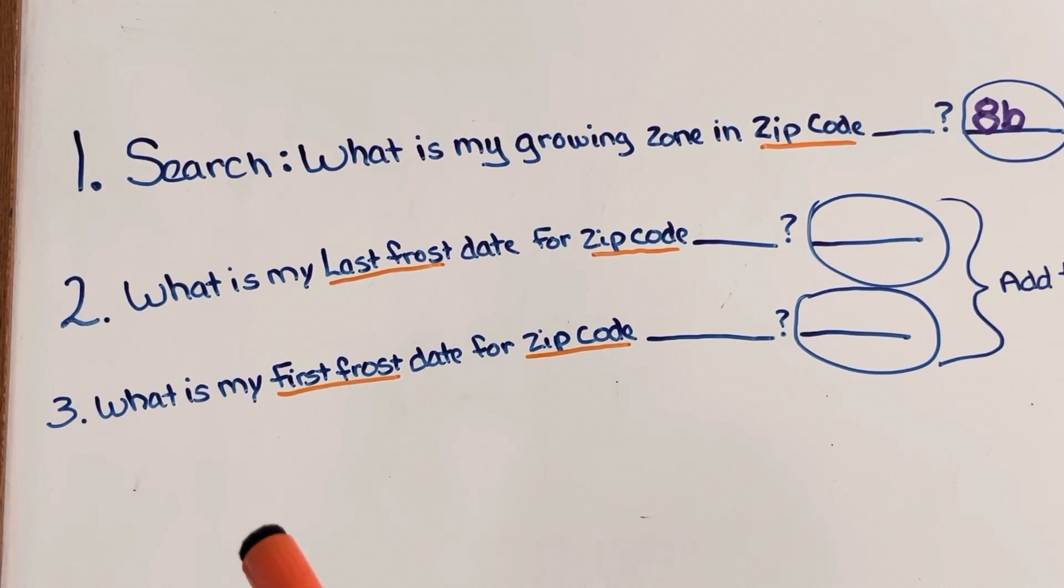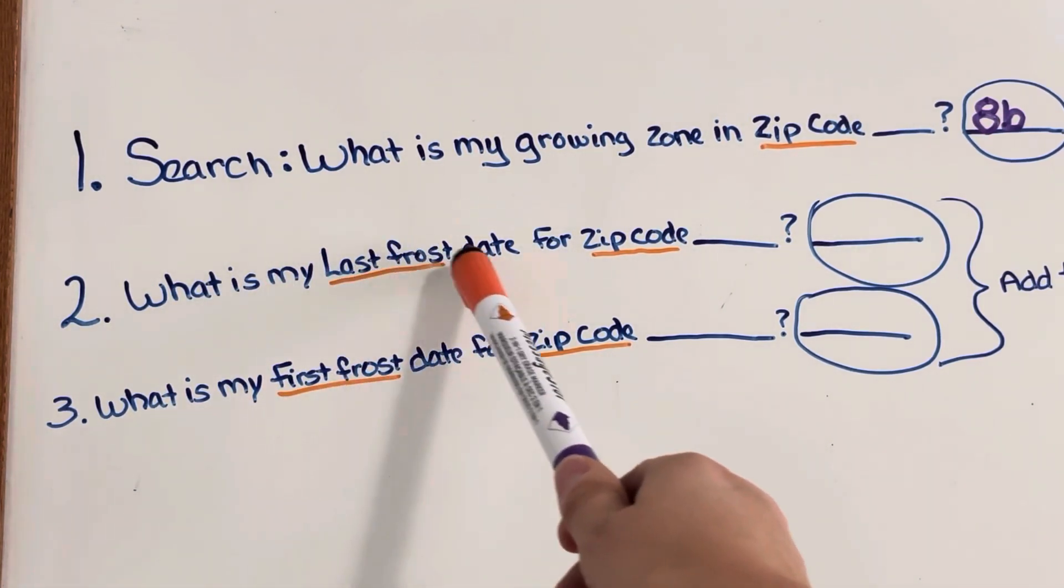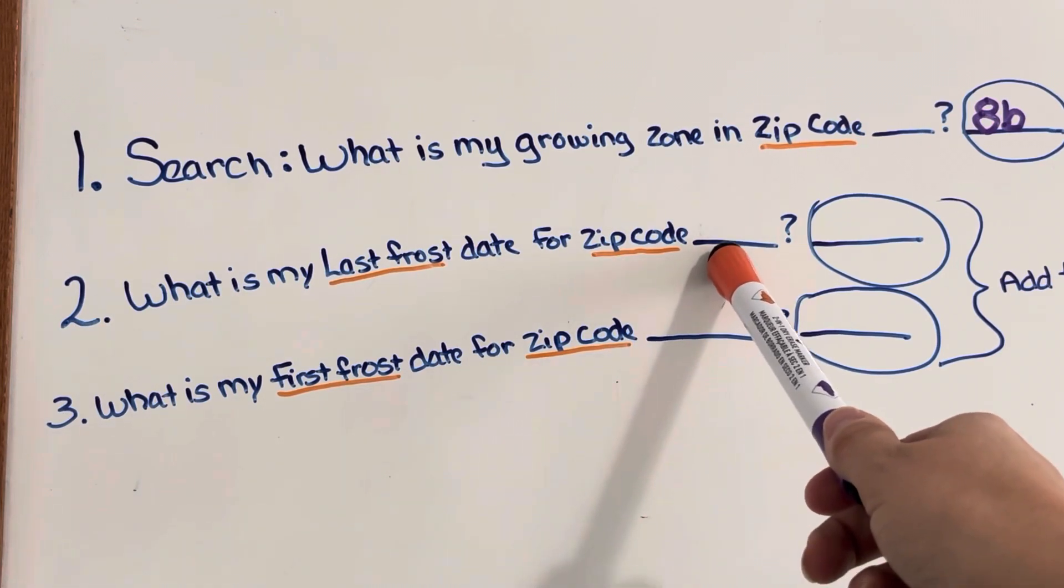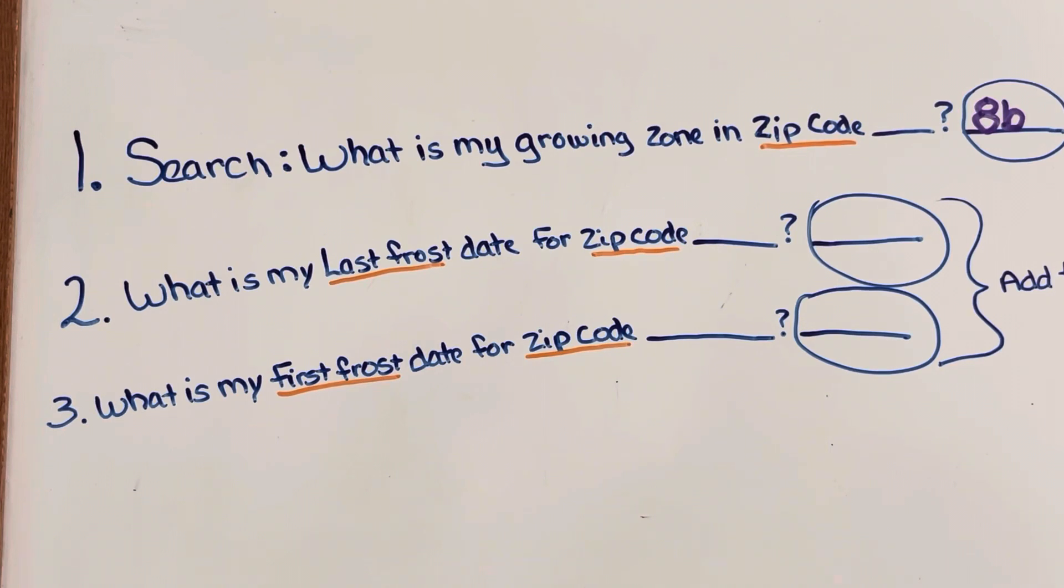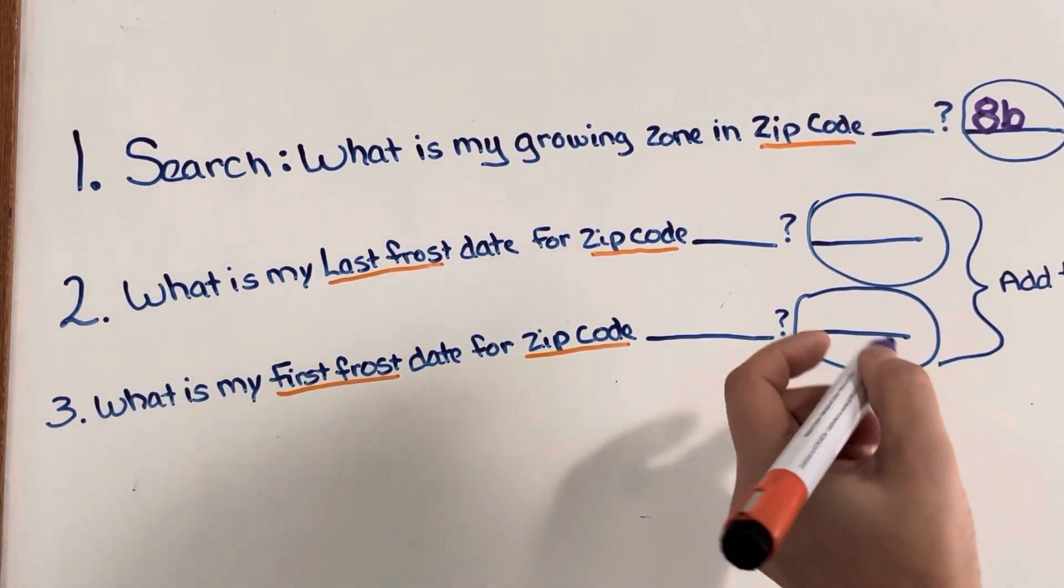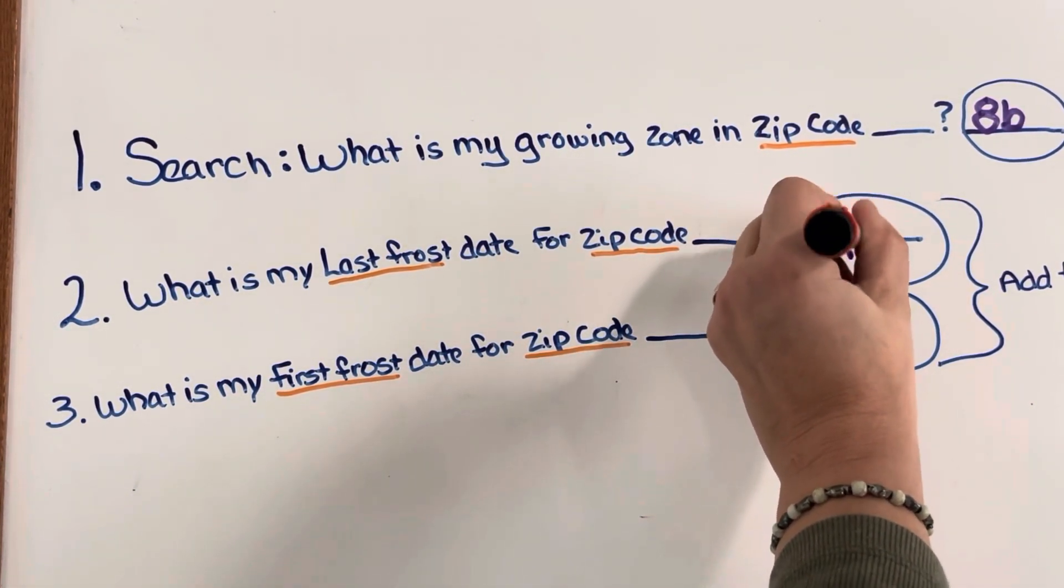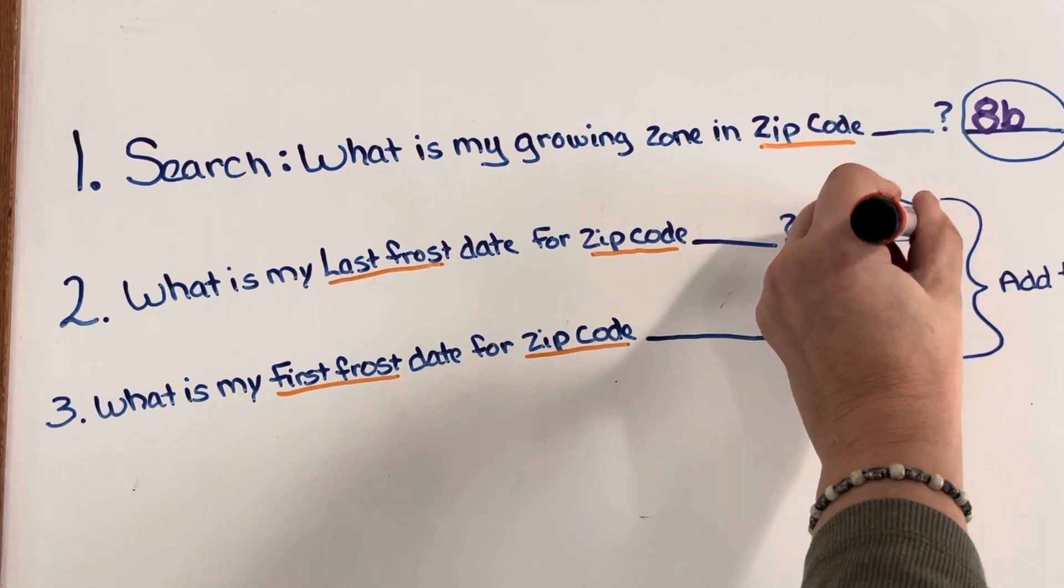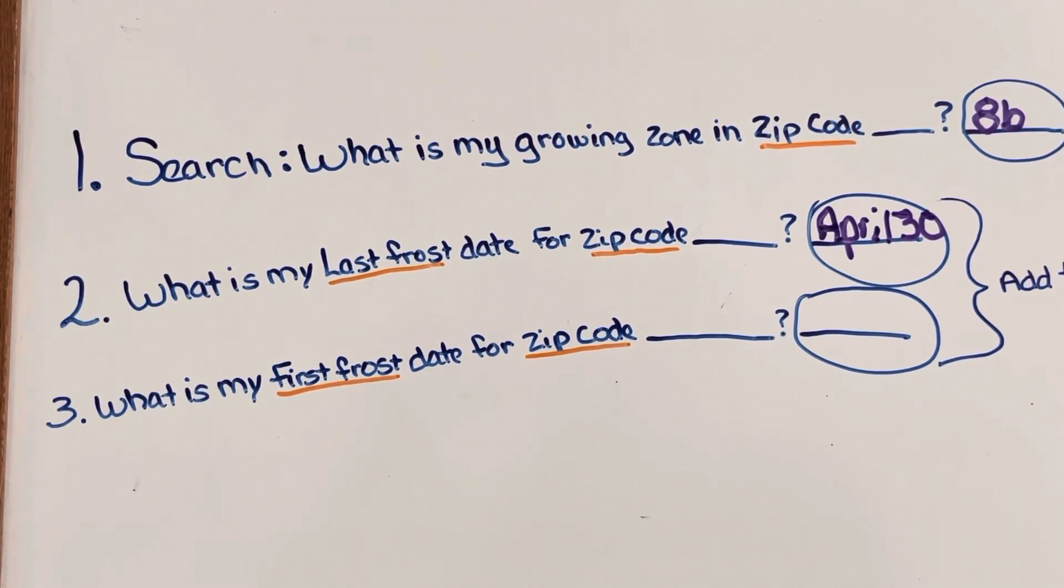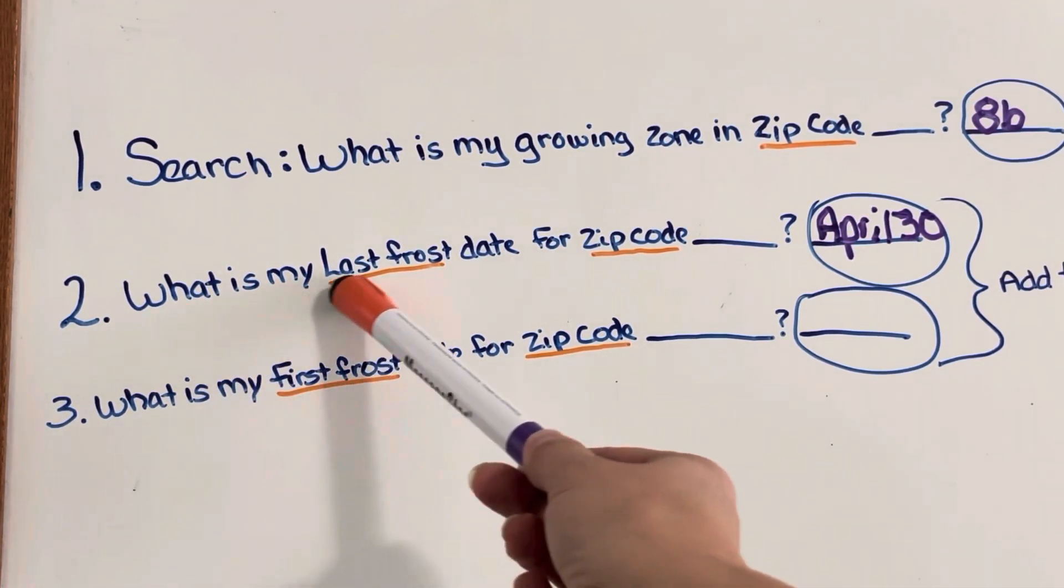So now what you need to do is you need to go and you need to look up what is my last frost date for zip code and then enter your zip code. It'll tell you what your last frost date is. My last frost date is April 30th, which is my birthday. I'm gonna be 21 again just kidding. So you want to do your last frost date which will be sometime in the spring, write it down.